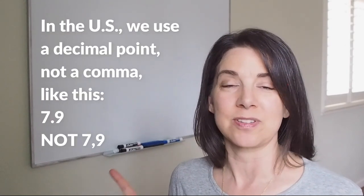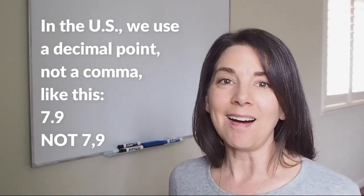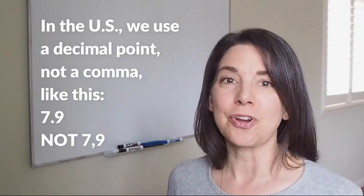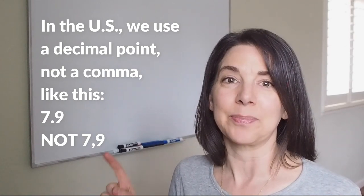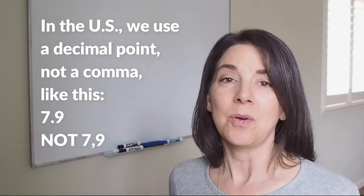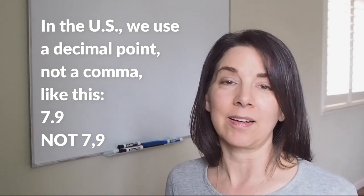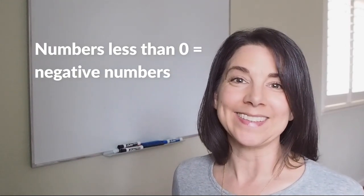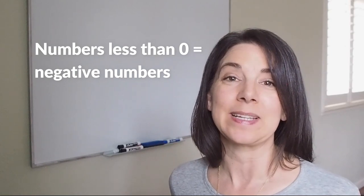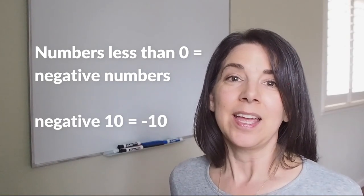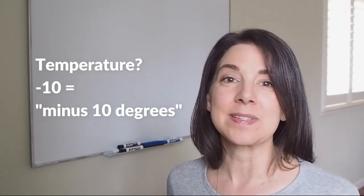Also notice that in the US we use a decimal point, which is like a period, not a comma, to show numbers that are less than zero. So for example, in 7.9 we use a period, not a comma. Any number that is less than zero, we call those negative numbers. So for example, we can say negative 10. If we're talking about a temperature, we would say minus 10 degrees.